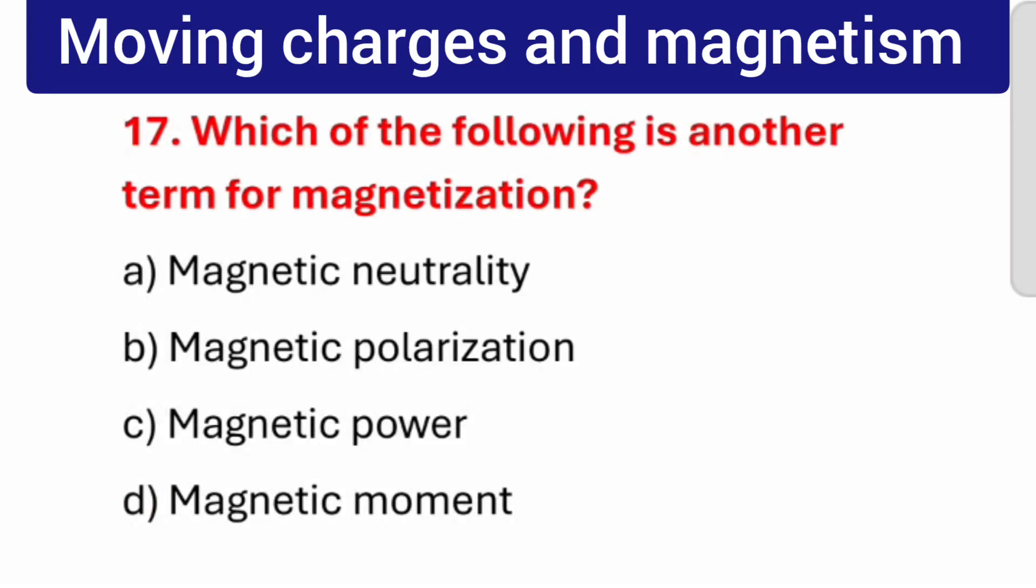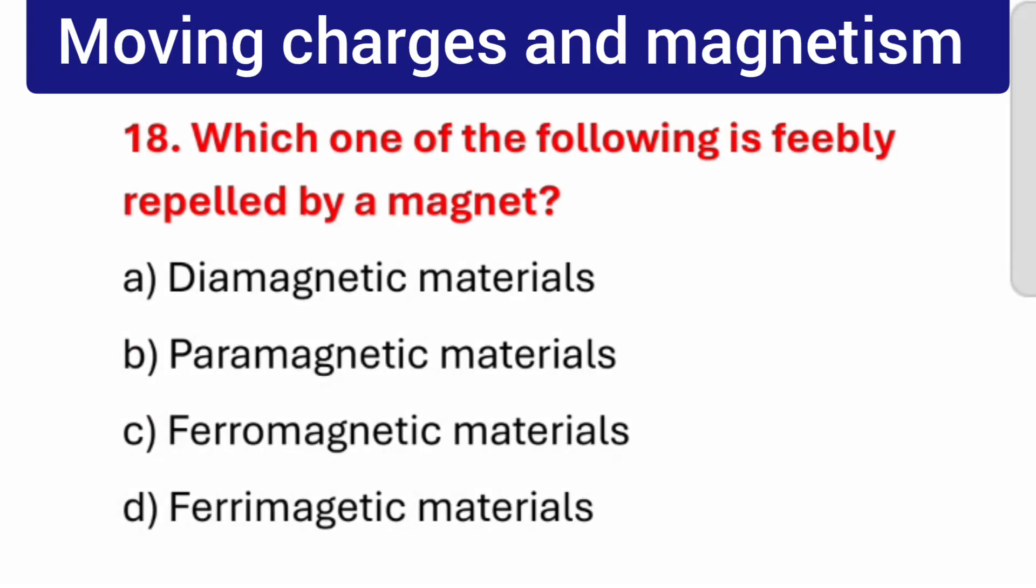Question number 17: Which of the following is another term for magnetization? The correct answer is magnetic polarization. Question number 18: Which one of the following is feebly repelled by a magnet? The correct answer is diamagnetic materials.